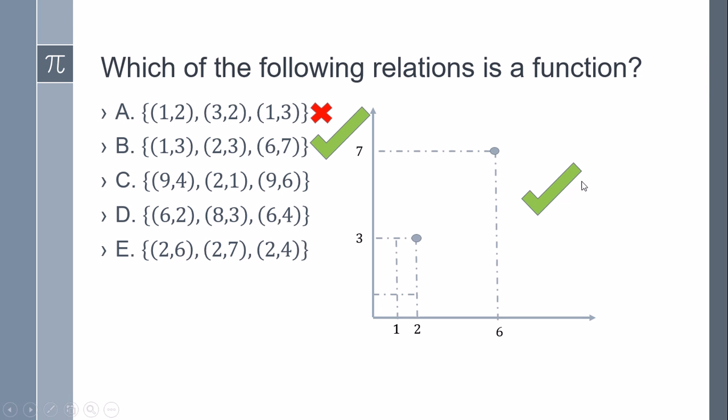Let's see the other cases and why they are not functions. Option C has (9,4), (2,1), and (9,6). We see here again how 9 has two relations, so this is not a function because 9 maps to two different numbers.